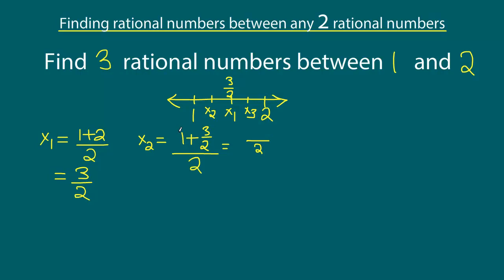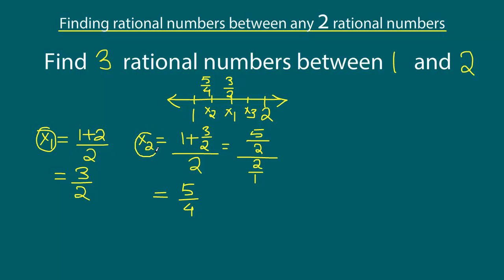The LCM at the top is two, so the numerator will be two plus three, which is five. The entire numerator is divided by two, so this will be five times one over two times two, giving us five over four. So x2 is five over four. We have now found our second rational number. This is the first rational number, and this is the second rational number.